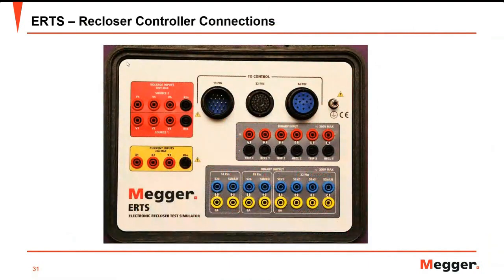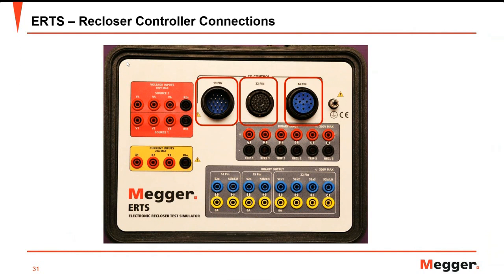Taking a closer look at the ERTS: three different multi-pin connectors provide flexibility for the different types of reclosers commonly found in the market. To simulate and test we have the 19-pin connector, the 32-pin connector, and the 14-pin connector. The Megger relay test units provide individual test currents and voltage through the interface unit and monitor the individual trip and reclose circuits from the simulator.